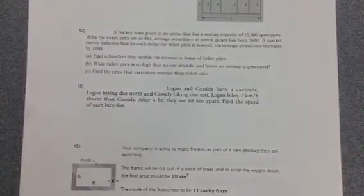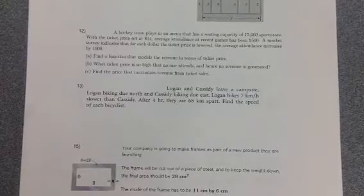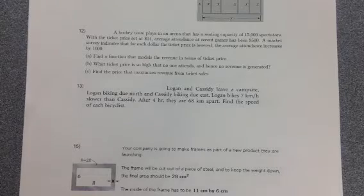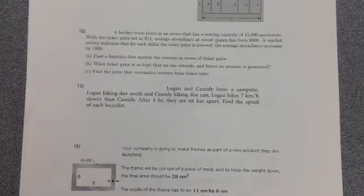Alright, let's talk about Logan and Cassidy. Apparently Logan and Cassidy had a fight because they were camping together and Logan started biking one direction north and Cassidy started biking east. So they were driving apart. I wonder what happened.